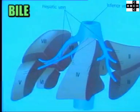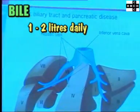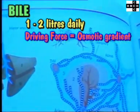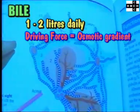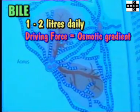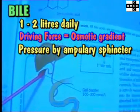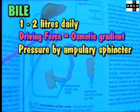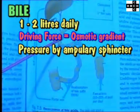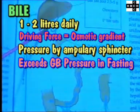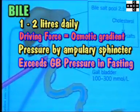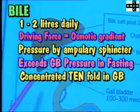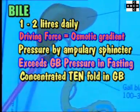Bile. The liver secretes about 1 to 2 litres of bile daily. The hepatocytes provide the driving force for bile flow by creating osmotic gradients of bile acids. The common bile duct pressure is maintained by the rhythmic contractions and relaxation of the ampullary sphincter. This pressure exceeds the gallbladder pressure in the fasting state, and bile is concentrated about 10-fold by reabsorption of water and electrolytes.